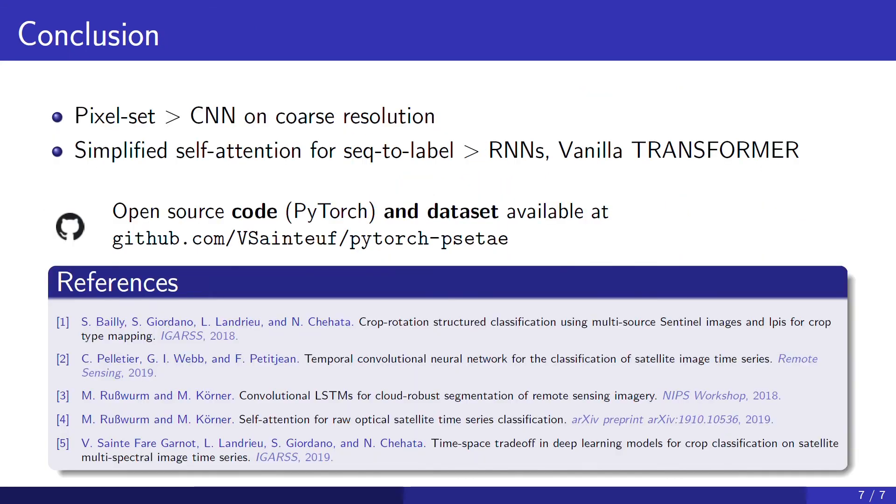Feel free to check our paper to see the detailed ablation study in which we show that the pixel set encoder outperforms the CNN even without pre-computed geometric features, and we will also show that the temporal attention encoder outperforms RNNs and vanilla transformer. The open source code and the data sets are available on our GitHub repo. Thanks for your attention and have a great remote conference.